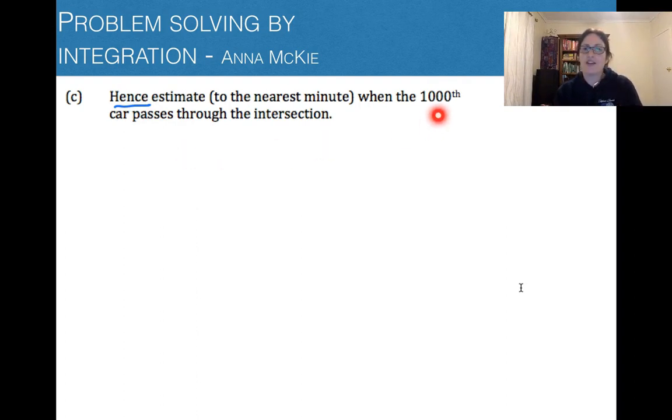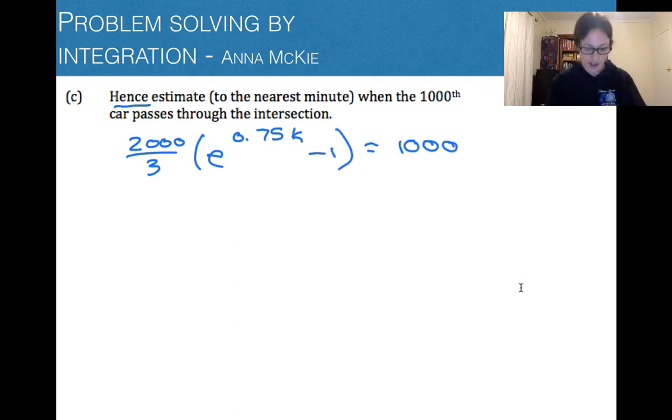It says hence estimate, which means you must use what you've calculated before. You might be tempted to go, oh, I've got no idea how to do this question. So I'm just going to do trial and error back in graph. And I'll sit there trialing different numbers for the area until I get that area equaling about 1,000. Well, you can do that. However, you wouldn't get marks for this question because you didn't use hence. So what we need to do is find out when that function, the integral that we wrote down before,